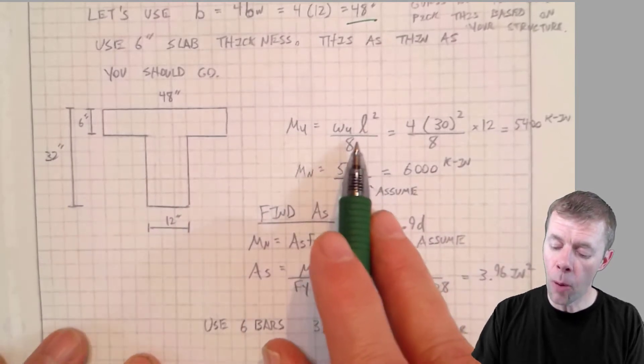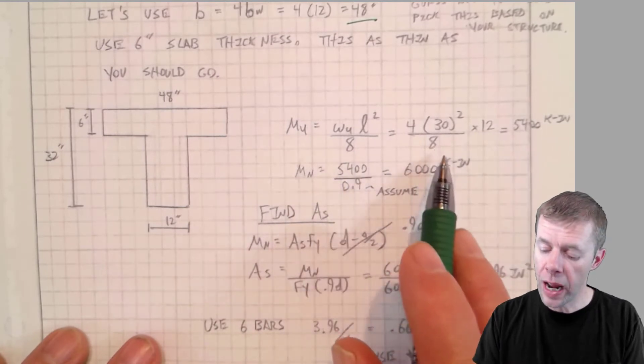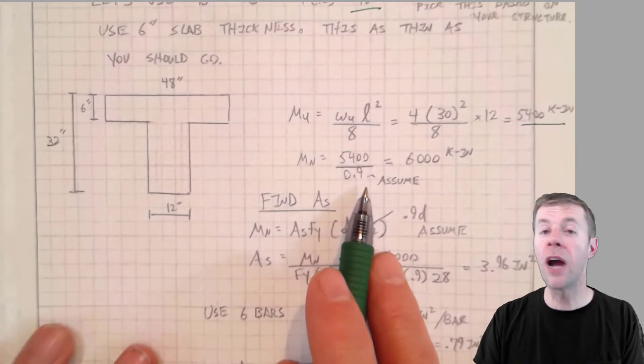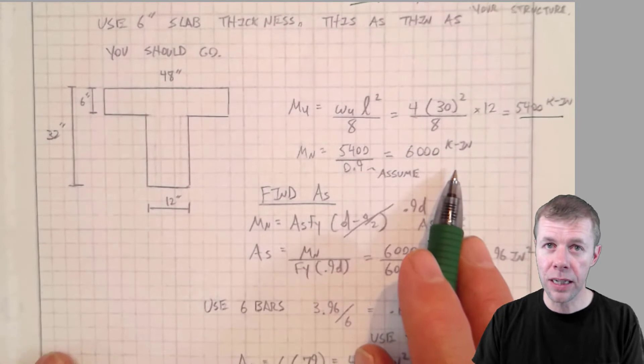Let's find the amount of steel we need. So I'm gonna take my moment. I'm gonna solve for my maximum moment. I'm assuming it's simply supported. Use my WL squared over 8 and I get 5,400 kip inches. I'm gonna assume my fee is 0.9. That's a good guess. I'm gonna check it at the end. So I get 6,000 kip inches.